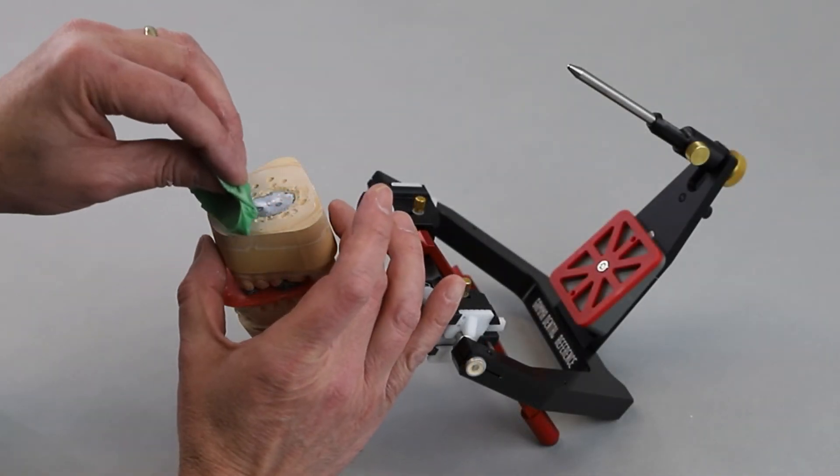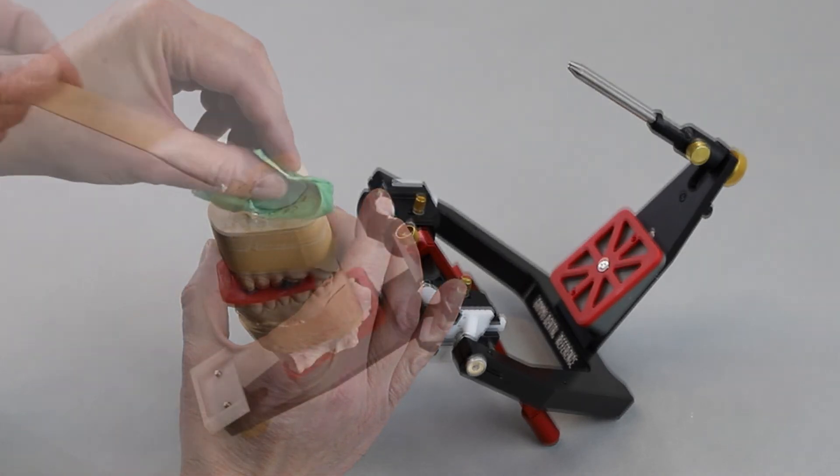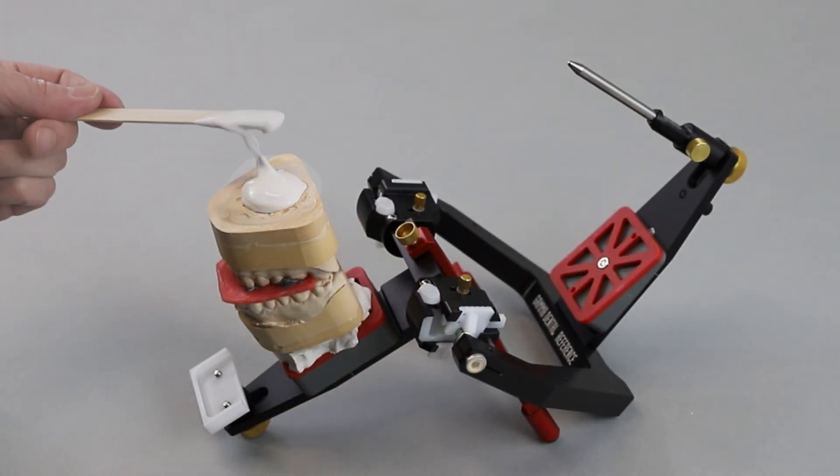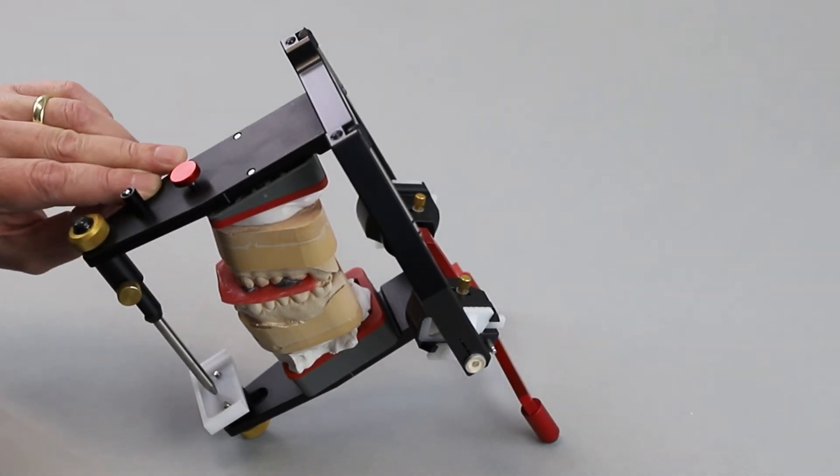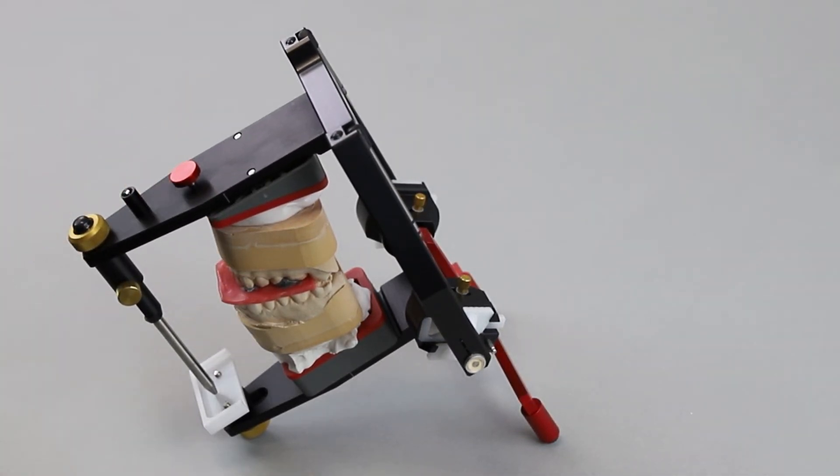Afterwards, the mandibular model is moistened and the mounting plaster is applied to the model and the mounting plate. Then the articulator is closed and the plaster hardens according to the manufacturer's instructions.